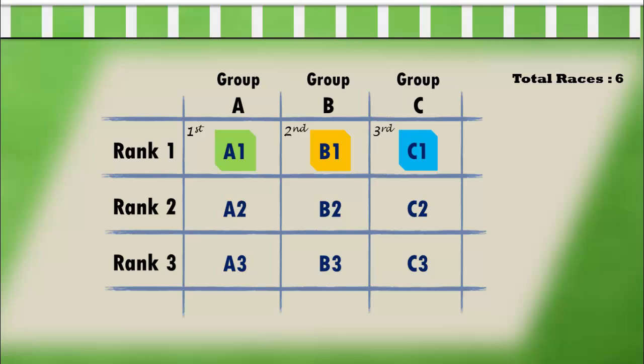We know that A1 is the fastest from the race group A as well as the fastest horse among the winners of all race groups, so we can declare the horse A1 as the number one fastest horse of the competition.